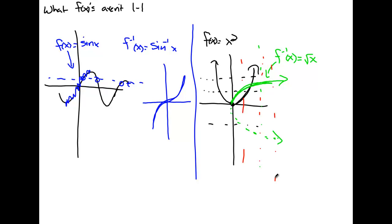So we've talked about what one-to-one means. We know that for a function to have an inverse, it has to be one-to-one.